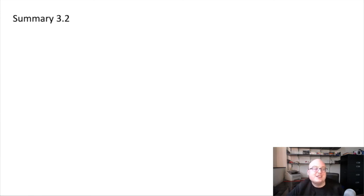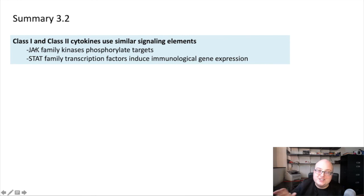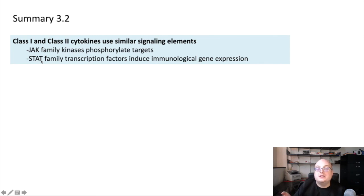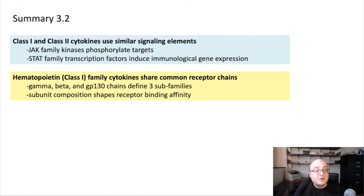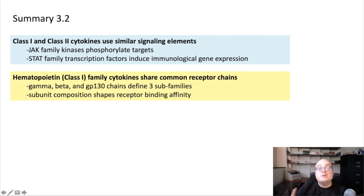Okay, let's summarize. Class 1 and class 2 cytokines use similar signaling elements, which is why we've grouped them together in this lecture. They both signal through Janus kinases, or JAK kinases, which are receptor-associated kinases that allow them to transduce signals. JAK kinases activate a family of transcription factors called STATs, which ultimately translocate to the nucleus and promote immunological gene expression. Hematopoietin cytokines, or class 1 cytokines, share common receptor chains — that's what defines them as a family. They can be divided into three subfamilies based on whether they share a common gamma, beta, or GP130 chain, and their subunit composition shapes binding affinity, determining the sensitivity of a cell to a given cytokine concentration.